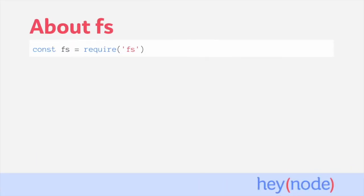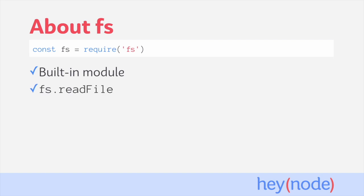FS is a built-in Node module. We don't need to install it from npm — you just require it anywhere in a Node.js file. There are a lot of different methods available in the FS module. The most commonly used ones are: fs.readfile, which will read the data contained in a file, and fs.writefile, which writes data to a file. Its default behavior is to create the file if it doesn't exist, or completely overwrite the file if it does exist.